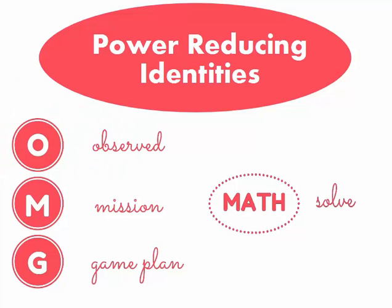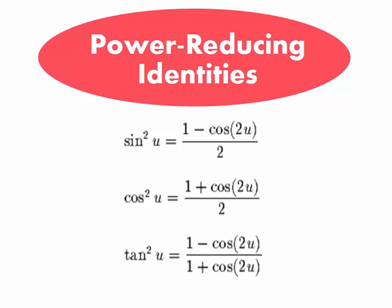Today we're going to be working with power reducing identities with the OMG math method. Our power reducing identities are given as follows — they look pretty simple. The problem we're going to do today is pretty intense, so be ready for a lot of math, a lot of algebra, and a lot of trig all mixed into one problem.